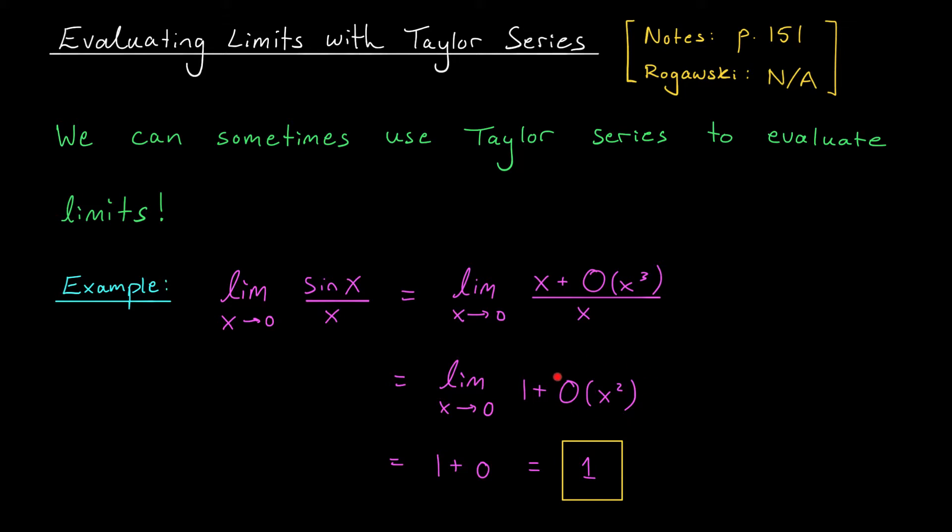The question is, what happens to big O of x squared as x goes to zero? Well, remember, big O of x squared could represent any function that's bounded above in absolute value by a constant times the absolute value of x squared. Well, as x goes to zero, that constant times the absolute value of x squared is also going to go to zero. So whatever this mysterious function is, we know it must be going to zero as x goes to zero. I have a limit that I can actually evaluate. My final answer is one plus zero, which sure enough is one.